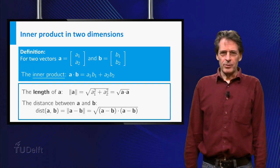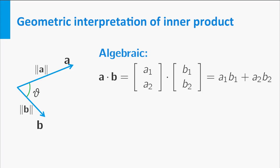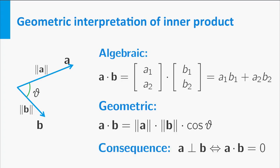There is an equivalent geometric characterization of the inner product. Namely, a dot b is also equal to the length of a times the length of b times the cosine of the angle theta between a and b. From this it follows immediately that a and b are perpendicular if their dot product is zero. In fact, the angle theta is completely determined by three inner products.